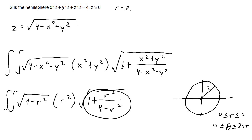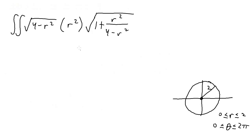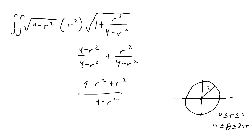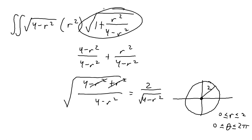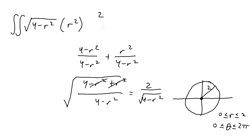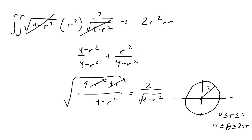Rewriting the double integral, we have the integral of 2r³ with r from 0 to 2 (dr) and theta from 0 to 2π (dθ). Evaluating the inner integral: the integral of 2r³ is 2r⁴/4 = r⁴/2. Evaluating from 0 to 2: 1/2 · 2⁴ = 1/2 · 16 = 8.